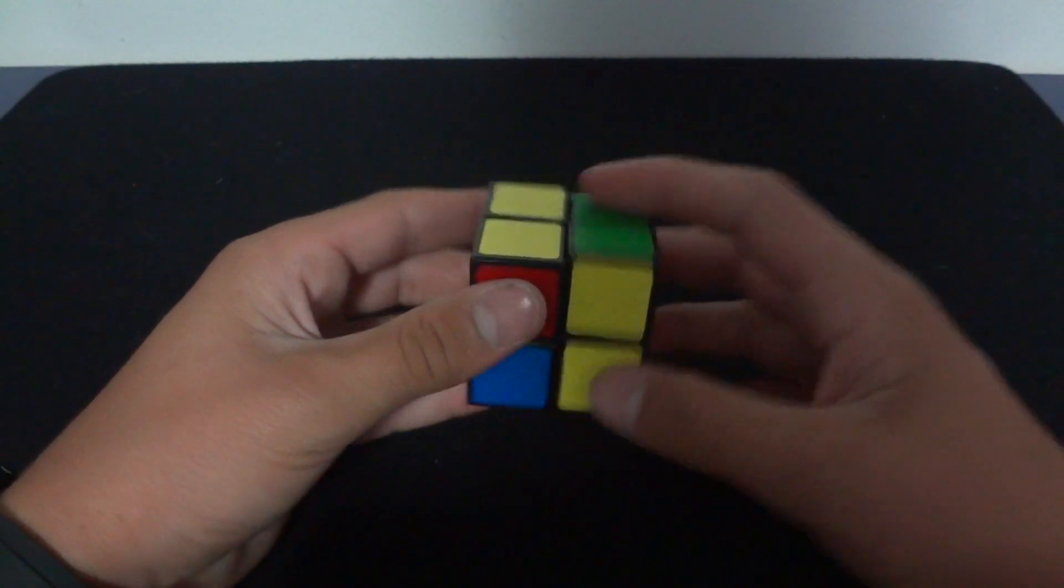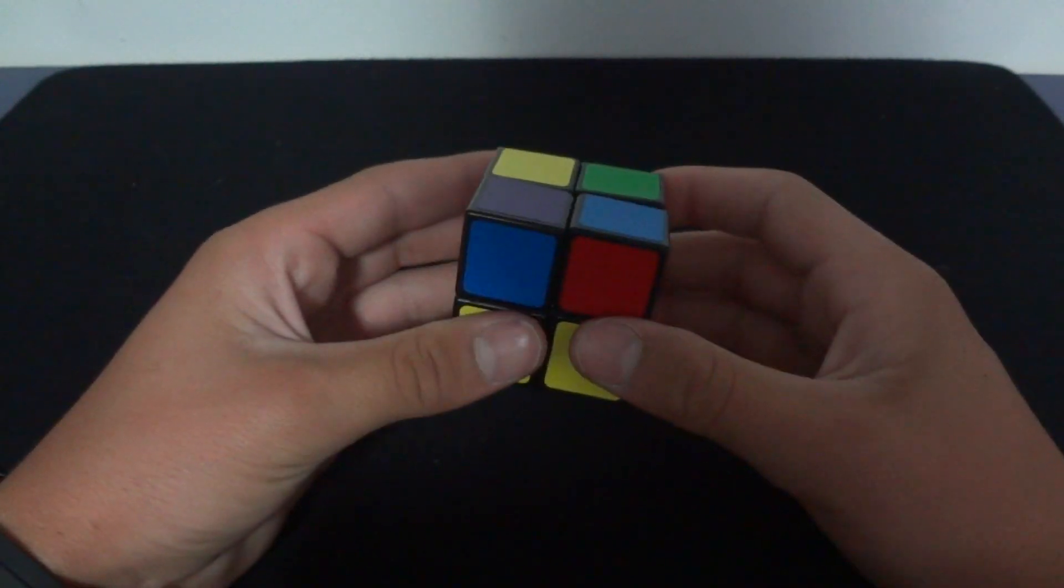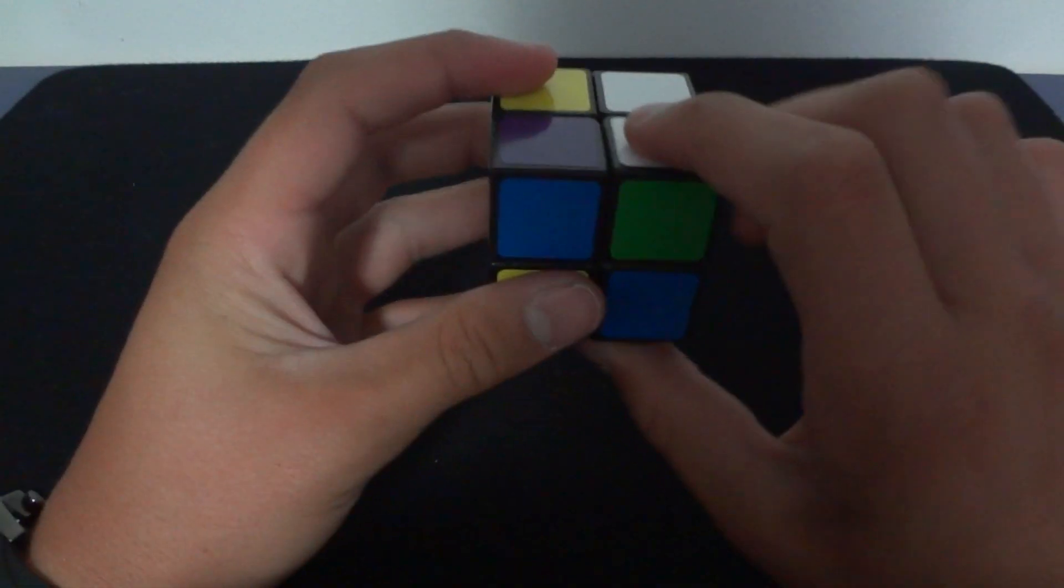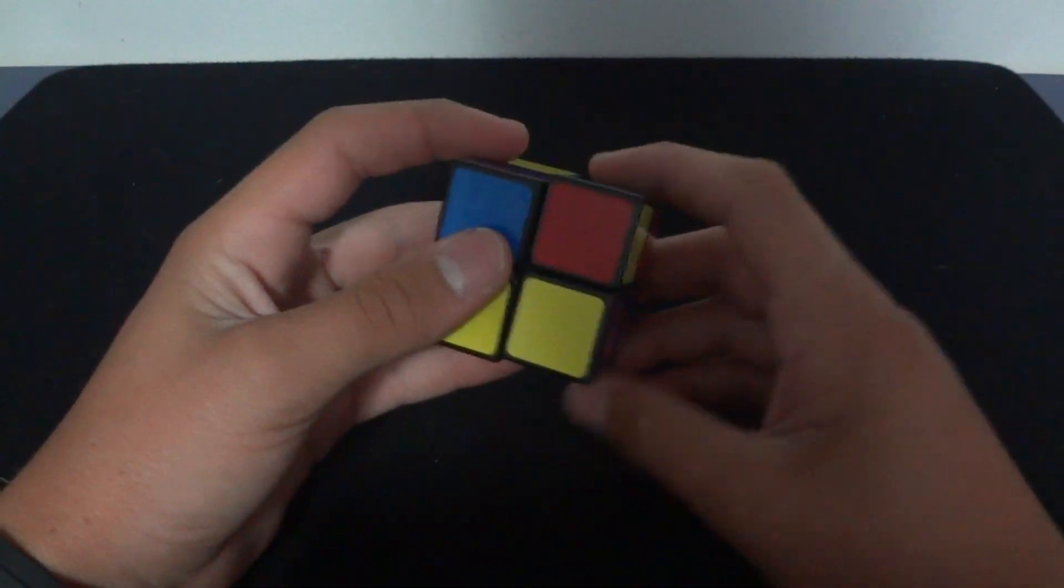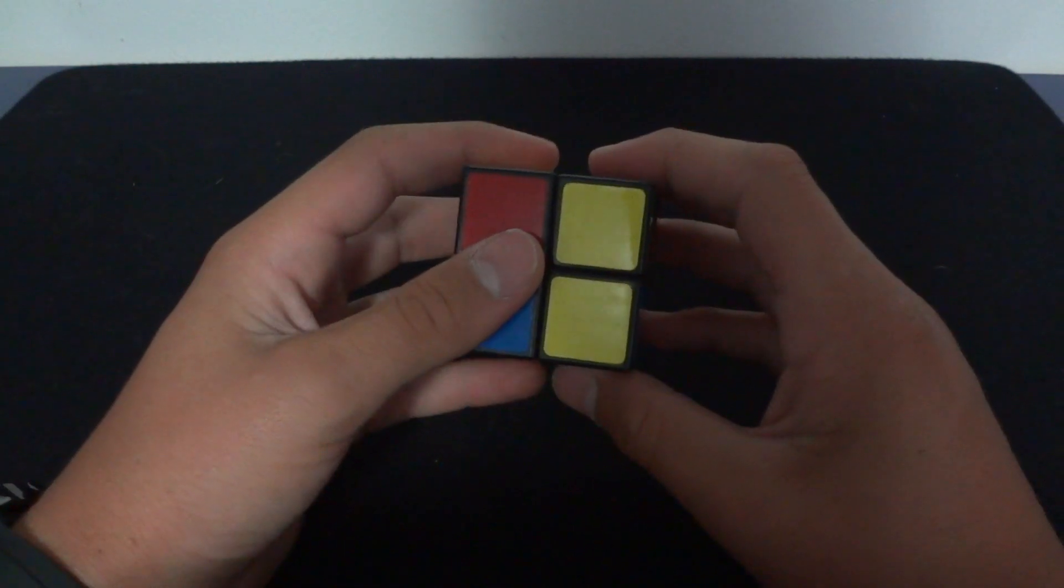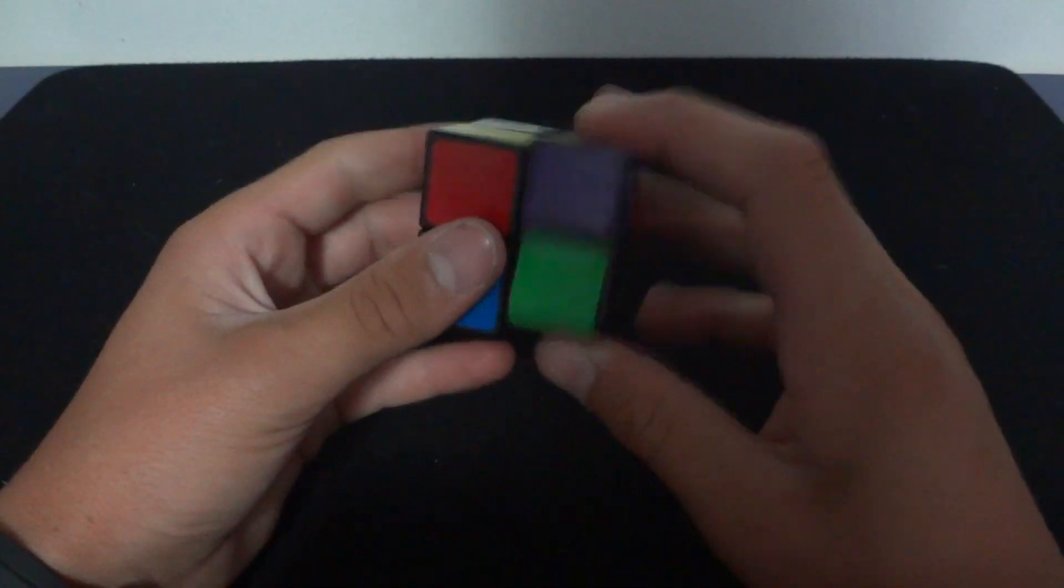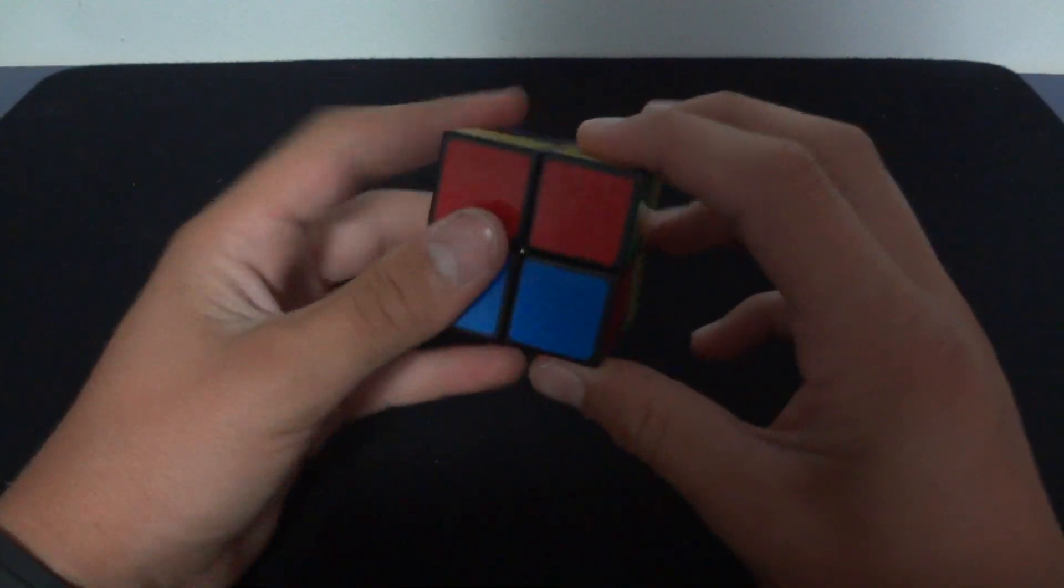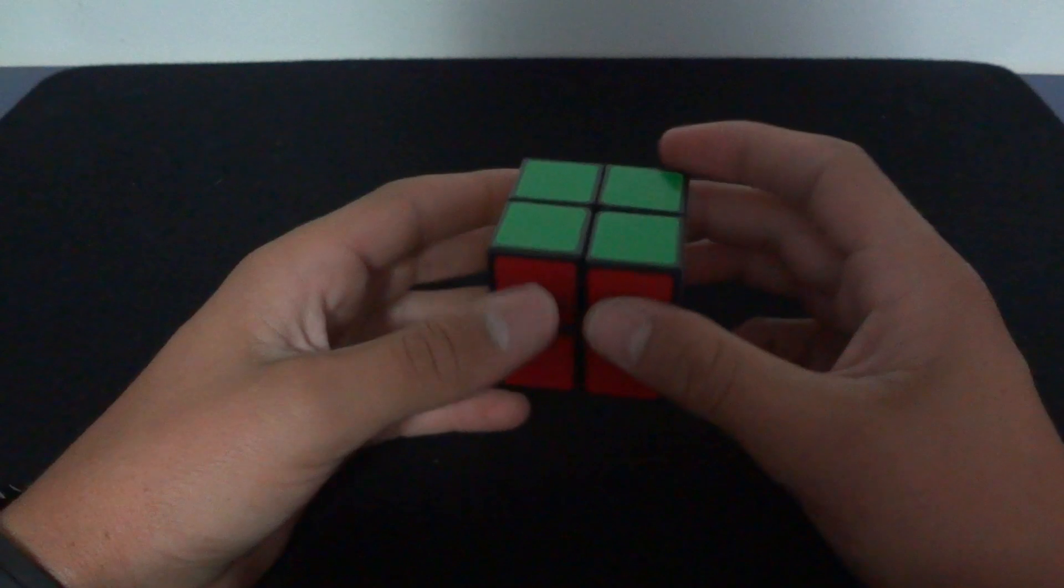So, have it facing away. This is the algorithm. Right inverted, face, clockwise, right inverted again, back, back. The other way, right. The other way, face. So right, face, counterclockwise, right, back, back, right, right, back, back, then twist the top. And you can see I'm completely solved. You're going to need to memorize both those algorithms.